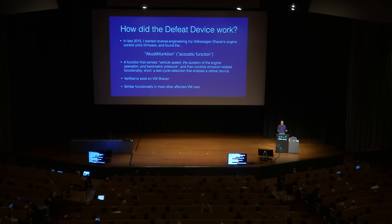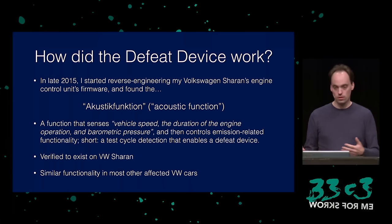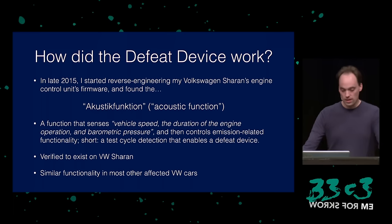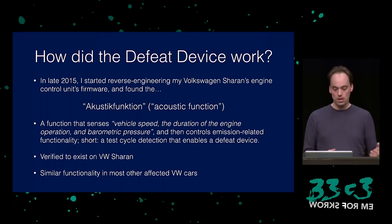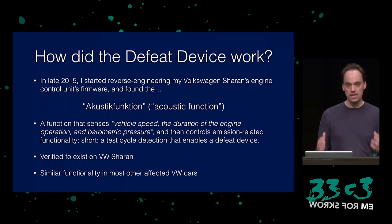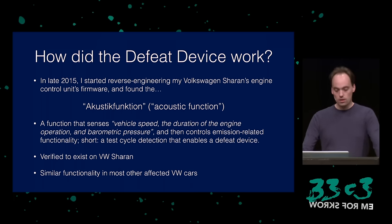Having the firmware image in hand, I could start actually reversing the defeat device. I found a function called "acoustic function" in German — a function that senses vehicle speed, duration of engine operation, and other things, and then controls emission-related functionality. In short, this is the test cycle detection that enables the defeat device. I verified it on my Sharan device by driving through the test cycle and logging data, and confirmed it's essentially the same defeat device used across many Volkswagen Euro 5 cars.